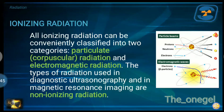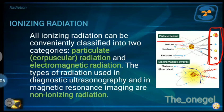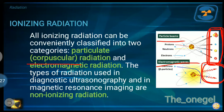The types of radiation used in diagnostic ultrasonography and in magnetic resonance imaging are non-ionizing radiation. As seen in the illustration, particle beams produce particles — sometimes called corpuscles, meaning tiny particles. Electromagnetic waves, on the other hand, produce energy in the form of waves. Particulate radiation consists of particles or corpuscles, while electromagnetic radiation consists of forms of energy.